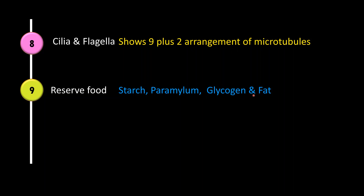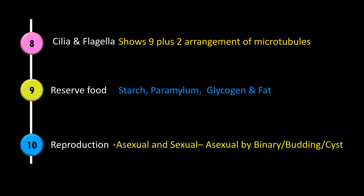The reproduction is both asexual and sexual. Asexual reproduction takes place with the help of binary fission, budding or cyst formation.